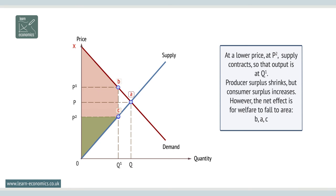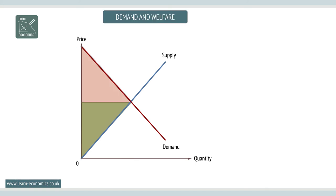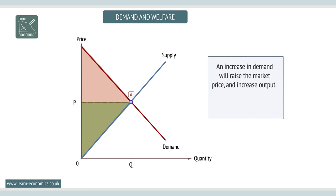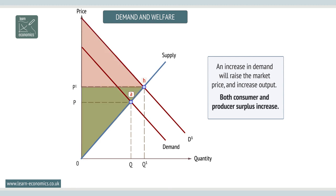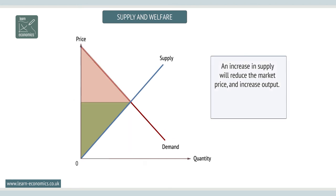An increase in demand raises welfare. An increase in demand raises both consumer and producer surplus. An increase in demand will raise the market price and increase output. Both consumer and producer surplus increase. Increases in supply increase welfare. An increase in supply will reduce the market price and increase output. Both consumer and producer surplus increase.